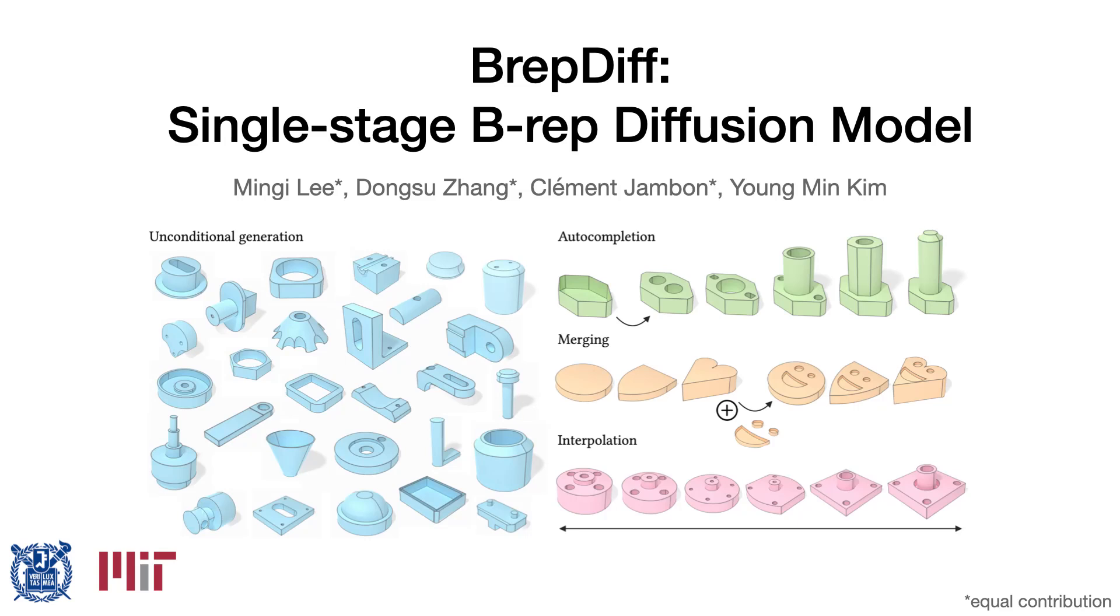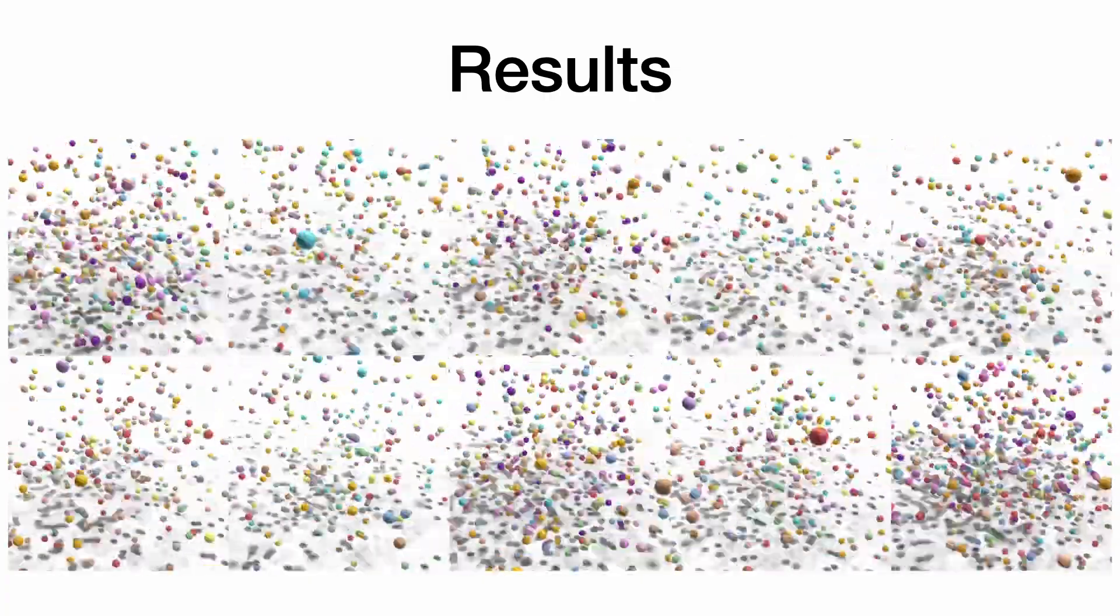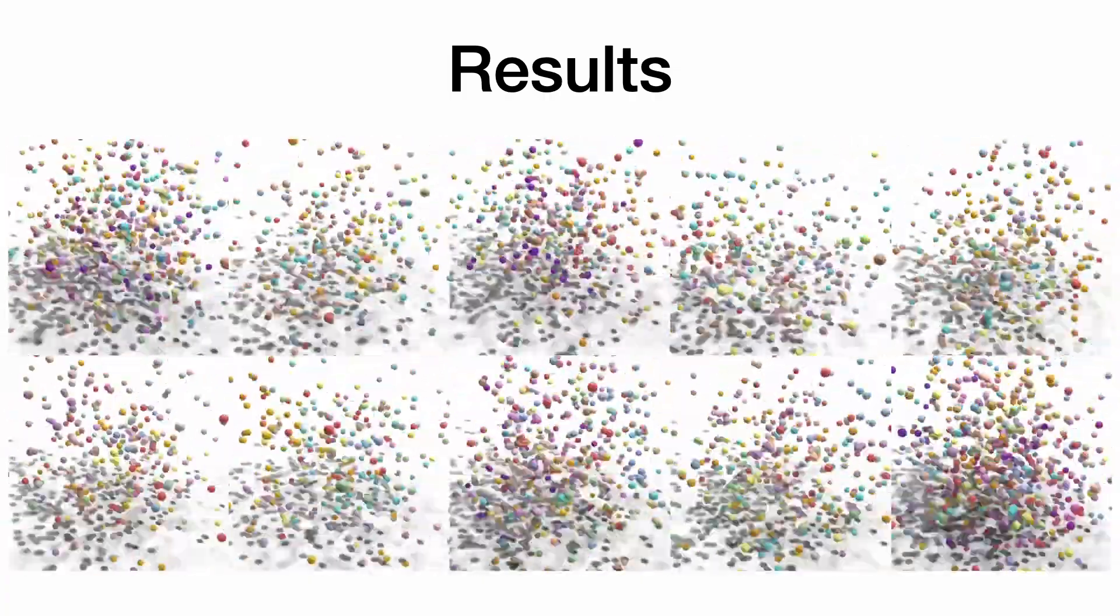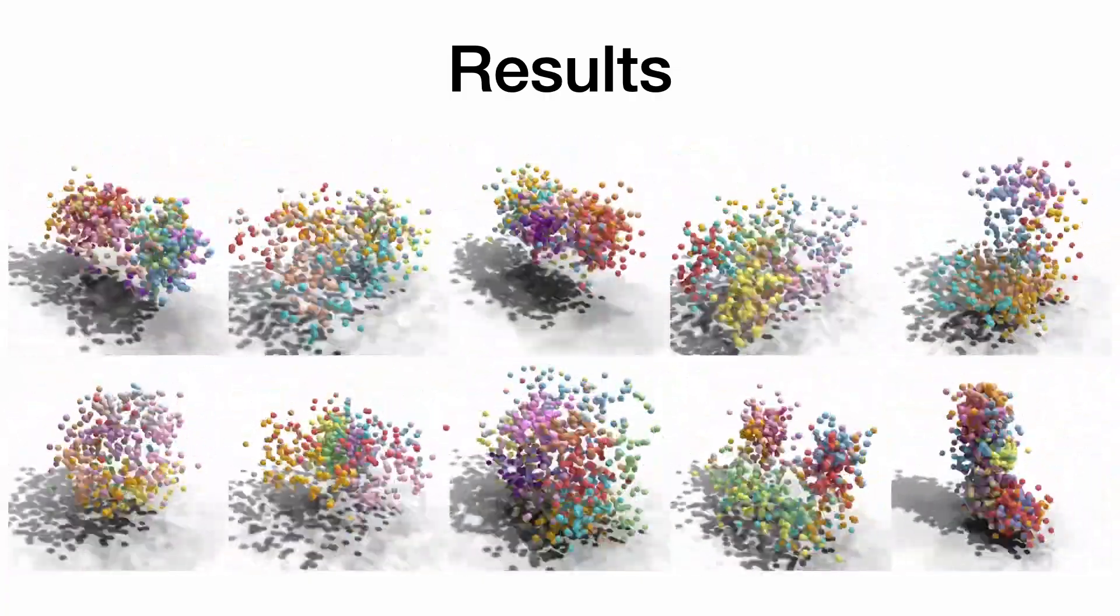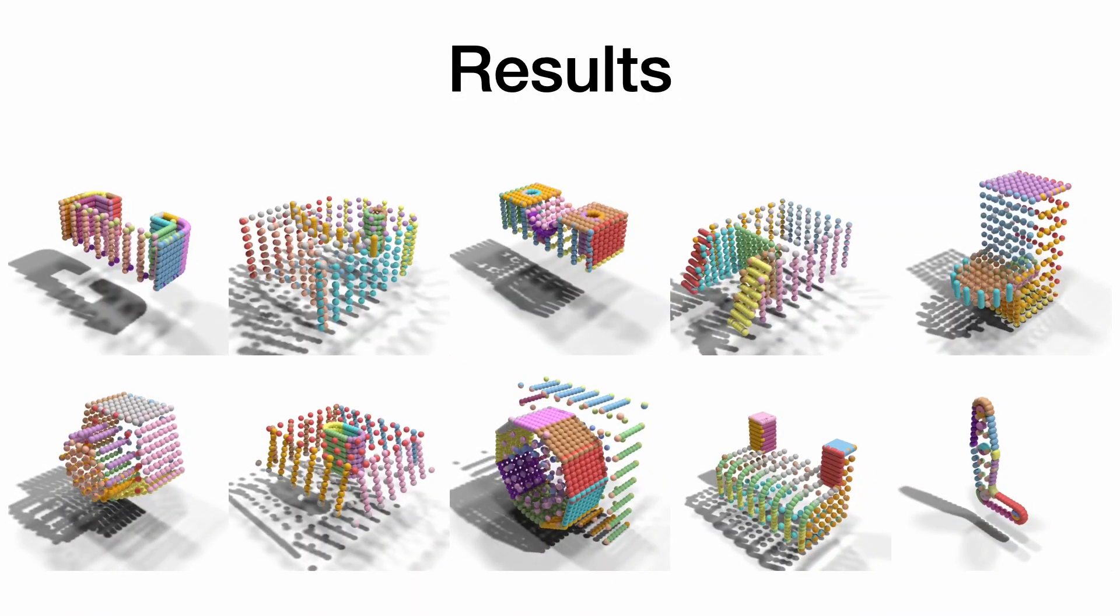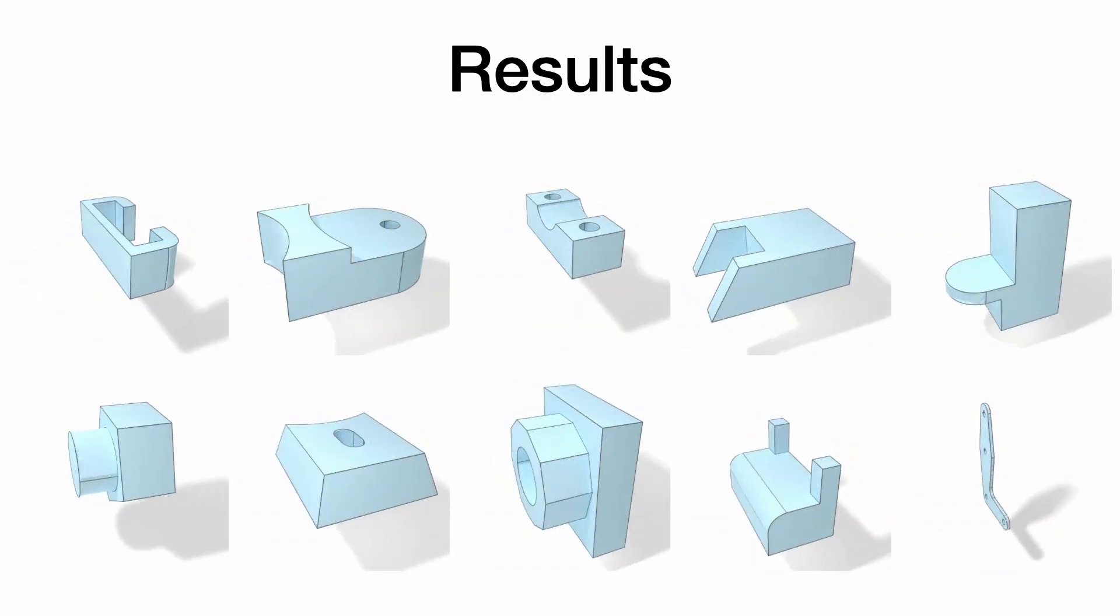We introduce BrepDiff, a single-stage diffusion model. Here we show that BrepDiff generates CAD-ready solids using diffusion. As we detail further, our representation unlocks a wide range of applications.